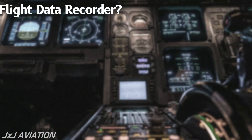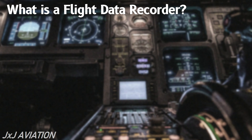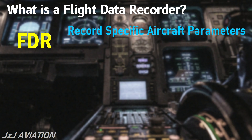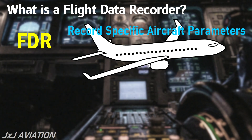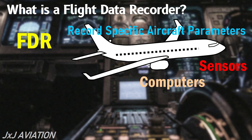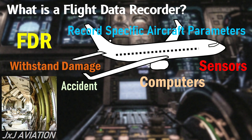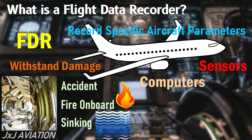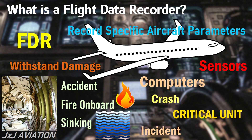What is a flight data recorder? A flight data recorder or FDR is a device which is used to record specific aircraft parameters. The FDR collects and records data from different sensors and computers. The FDR is built to withstand damage which may be caused by an accident, a fire on board the aircraft, or because of sinking underwater. So the FDR becomes a critical unit during the investigation of a crash or any aircraft related incident.